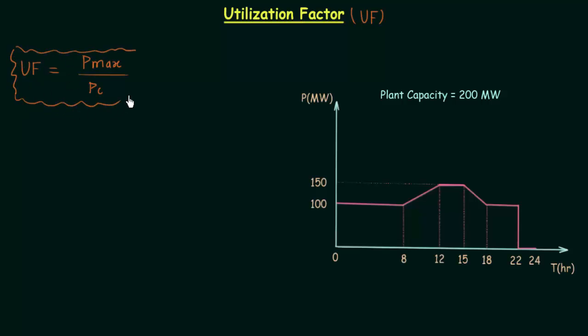Using this we will calculate utilization factor of the given load curve. In this particular case you can see the plant capacity is equal to 200 megawatts. The installed capacity is 200 megawatts and the maximum power is from 12 hours to 15 hours and it is equal to 150 megawatts.